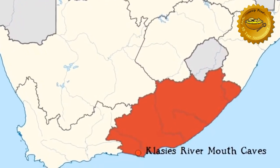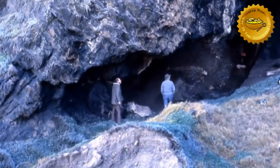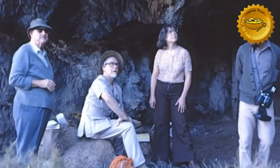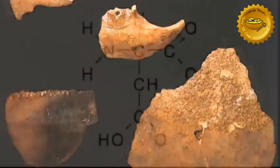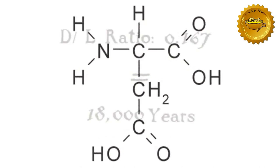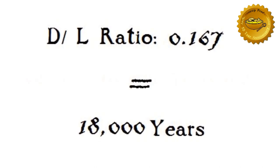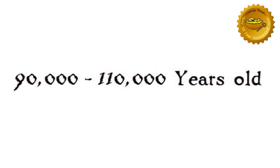These caves were originally investigated in the mid to late 1960s. The archaeologists involved were eager to take advantage of the new technique of amino acid racemization, as they had found human remains which were potentially extraordinarily old. They decided to observe a very particular amino acid — aspartic acid, shown here. Using radiocarbon dating to calibrate, they ascertained that the racemization rate over 18,000 years had been a ratio of 0.167. They applied this rate to the human remains and extrapolated a date of between 90 and 110,000 years old. Such dates are way beyond the range of radiocarbon dating and are crucial for understanding when and where we came from.